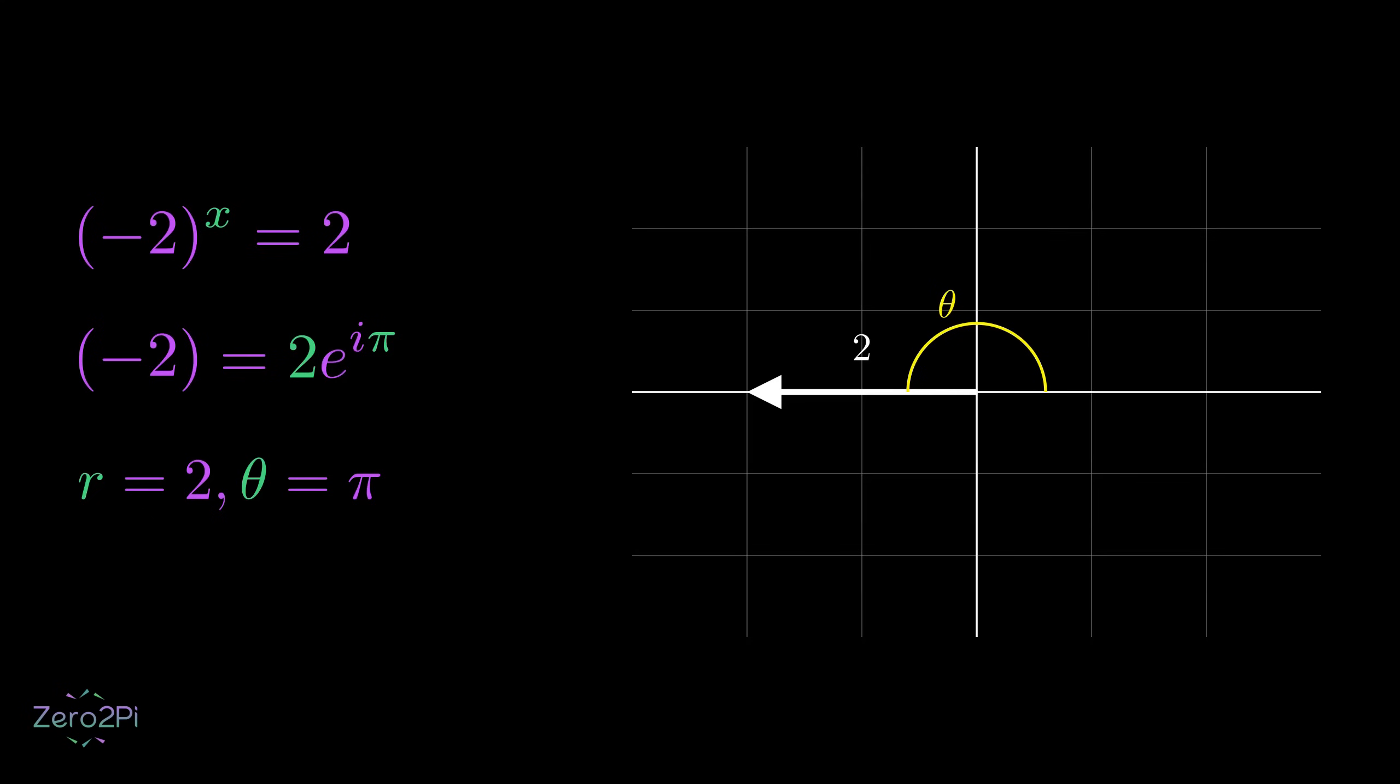The interesting part here is that there are actually infinite ways to get to the same spot. For negative 2, instead of just saying angle pi, we could say angle 3 pi. That's like going around once and then landing on negative 2. Or angle 5 pi. That's going around twice and landing on negative 2.